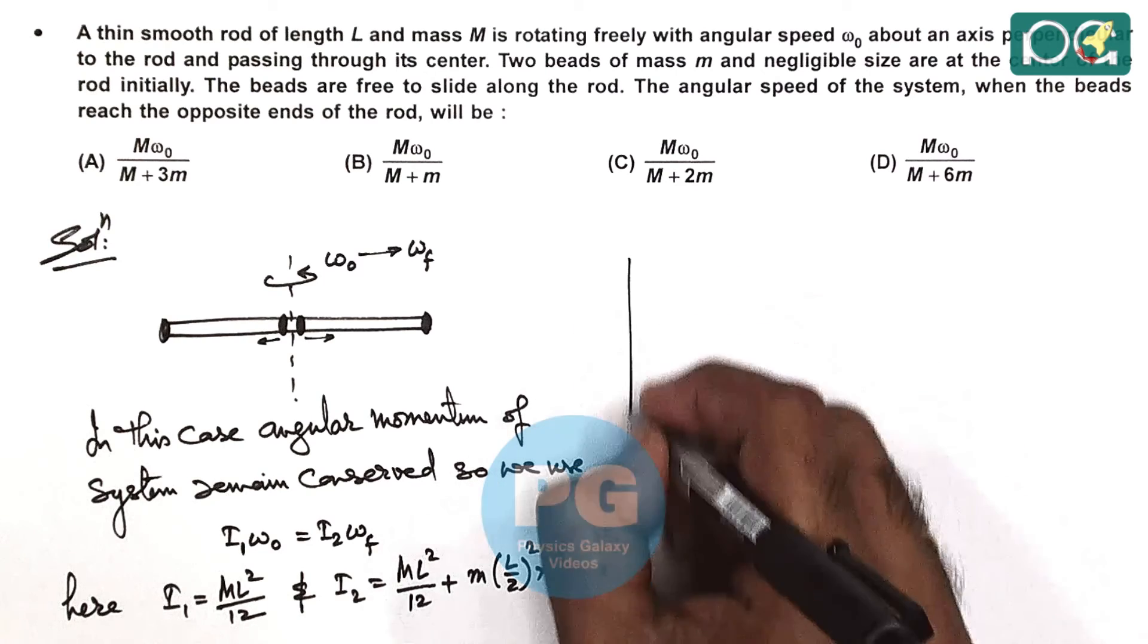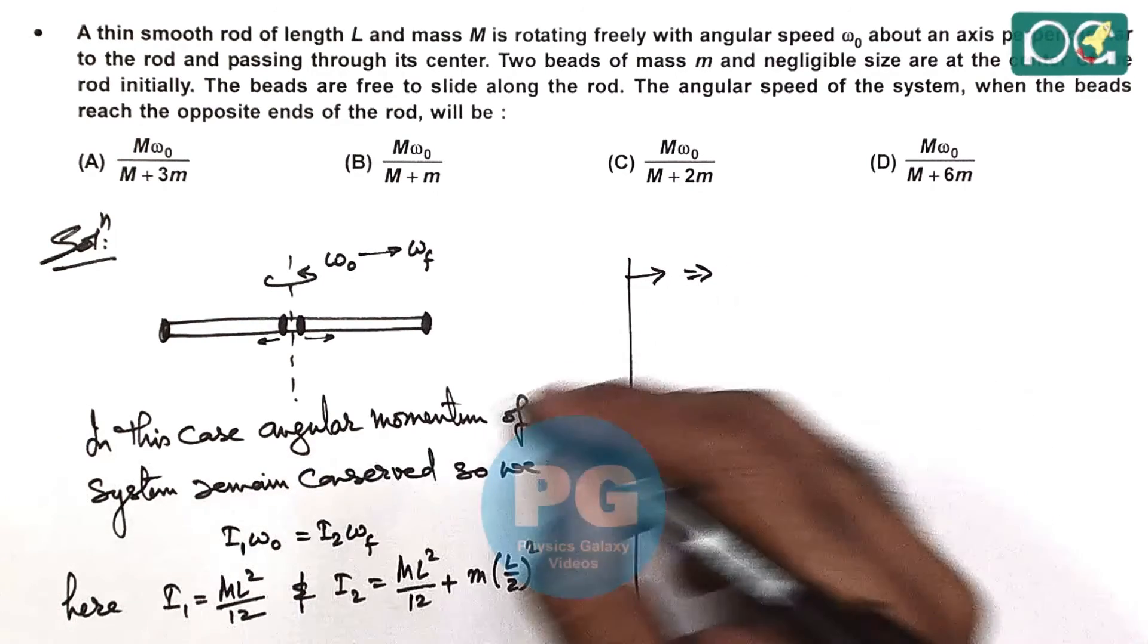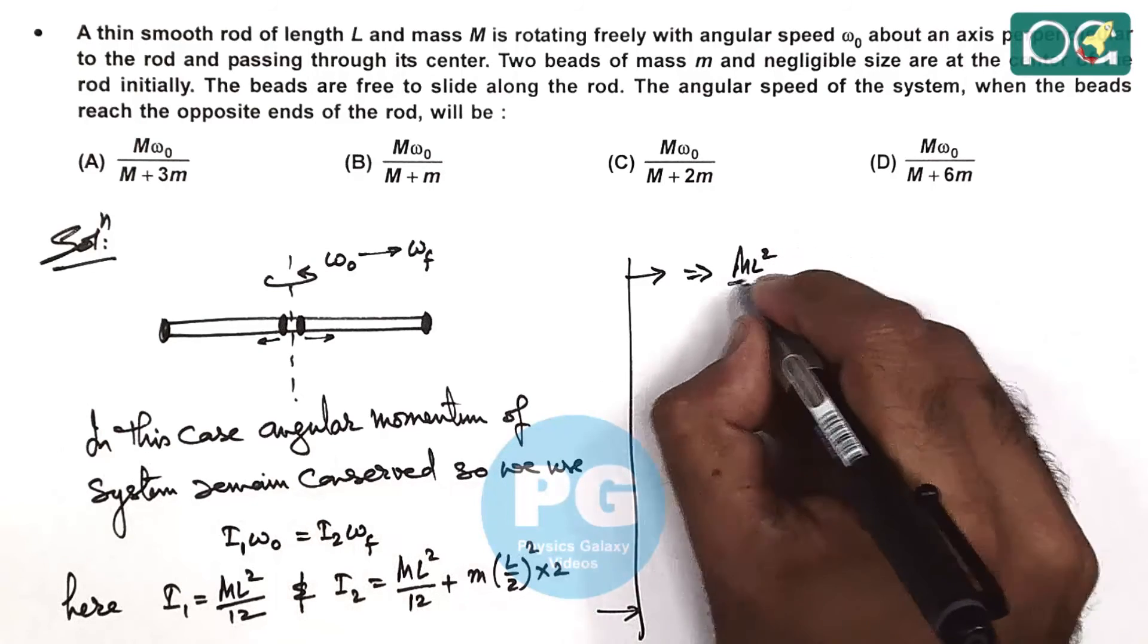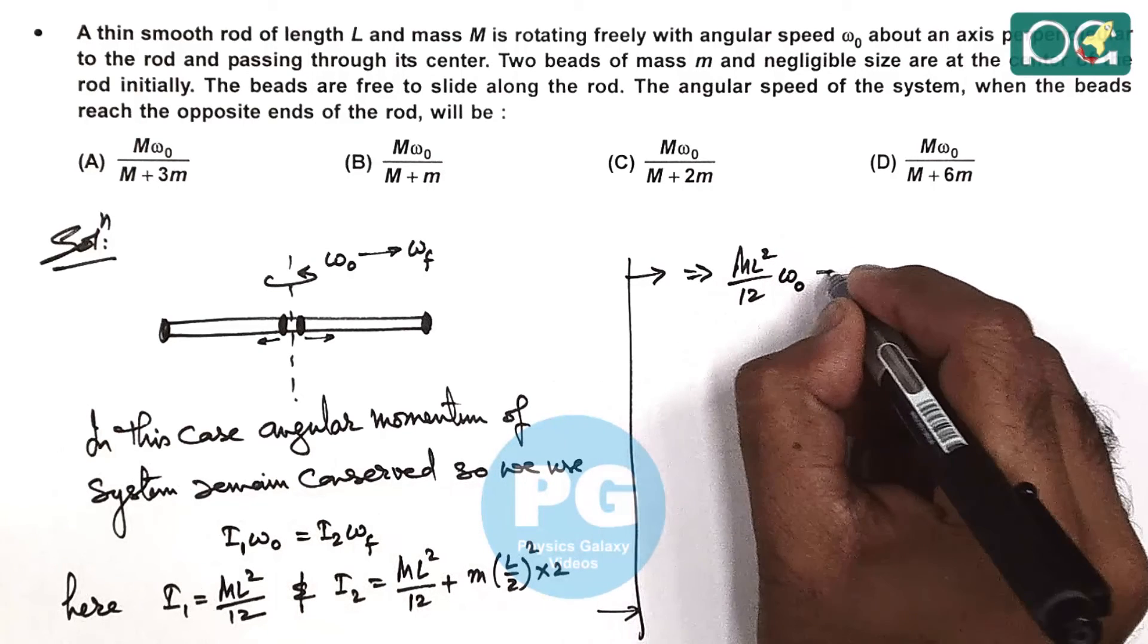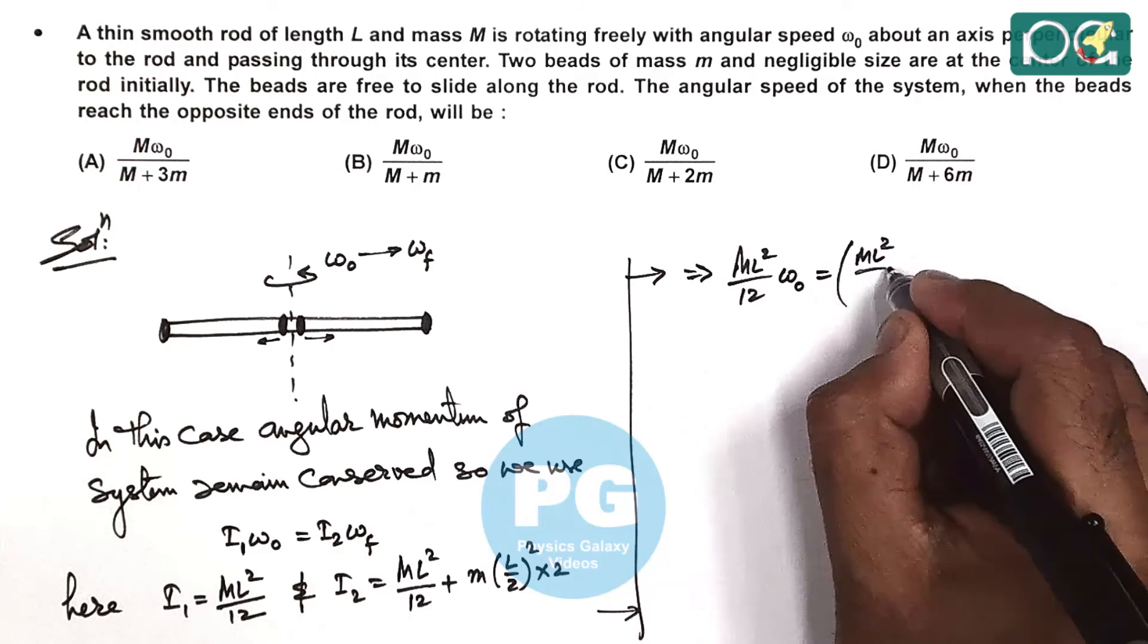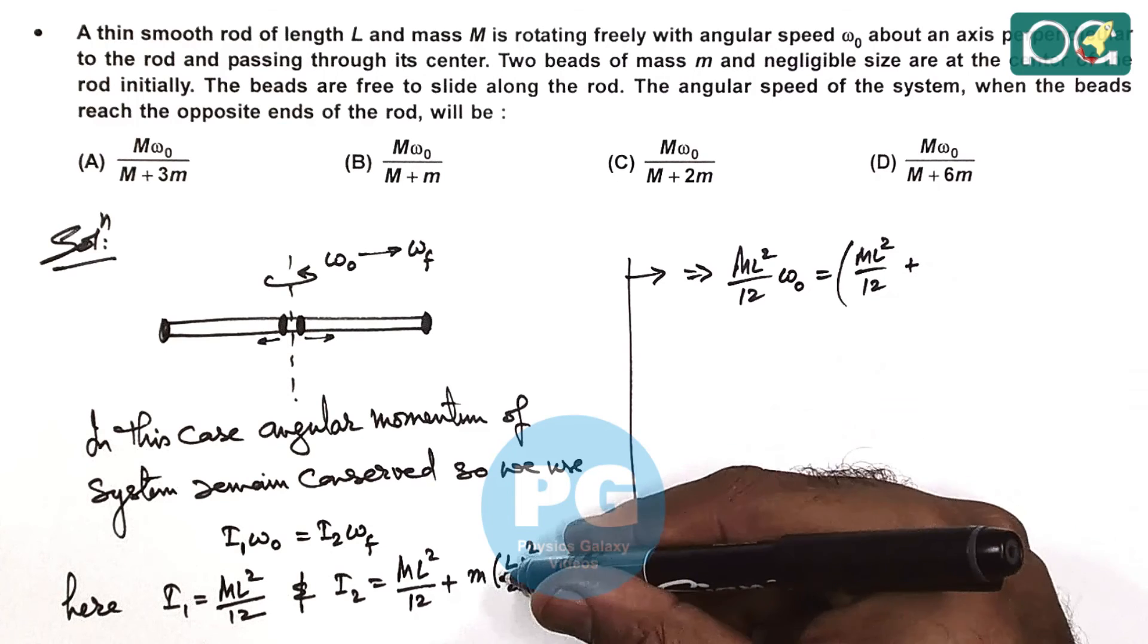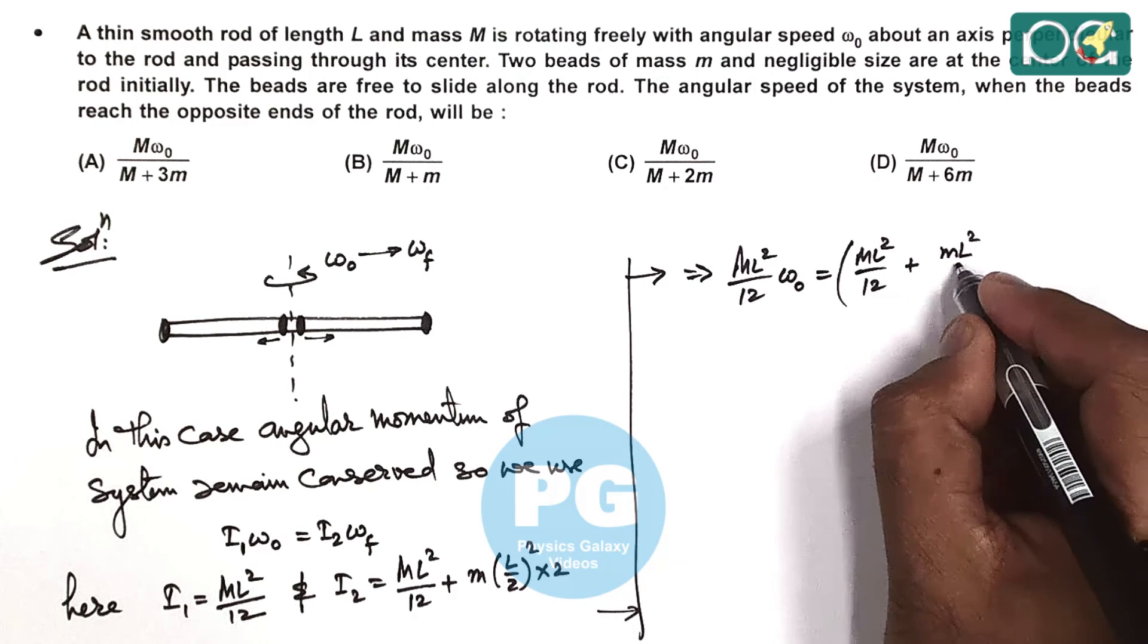So now if we substitute the values this gives I1 omega naught, that's ML square by 12 times omega naught, is equals to final moment of inertia is ML square by 12 plus this ML square by 2, small ML square by 2, omega final.